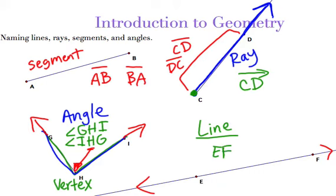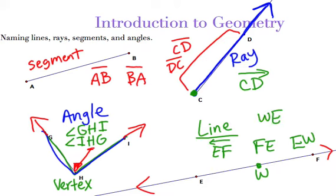You can use any two letters that are on the line. For example, EF, or I could say FE. If I had other dots on here — say a W — you can name it EW or WE. The symbol for our line is just a little picture of a line with arrows on top. Notice on the segment, we didn't need to put the little dots, because they can start looking like arrows when you're drawing small.